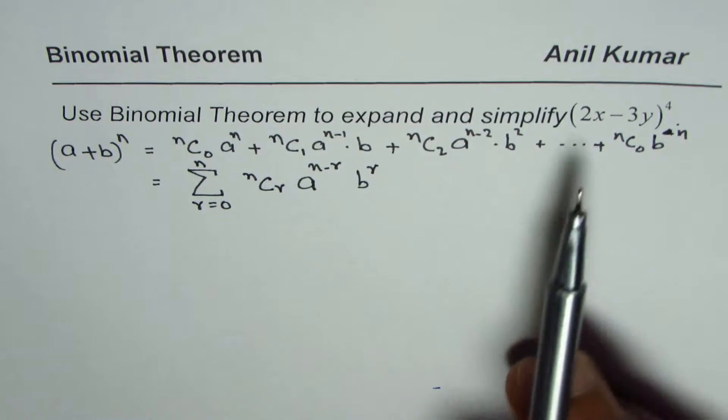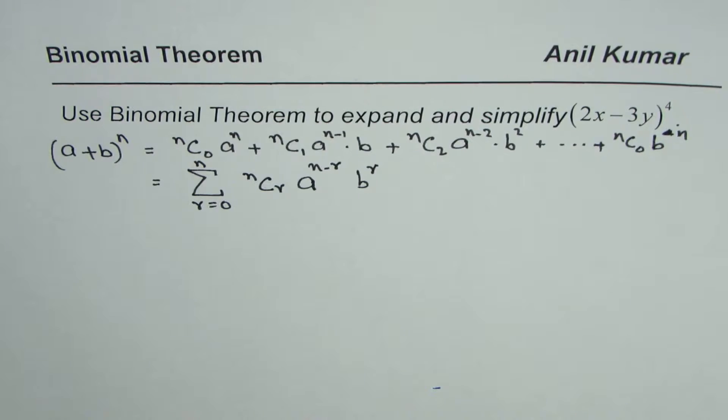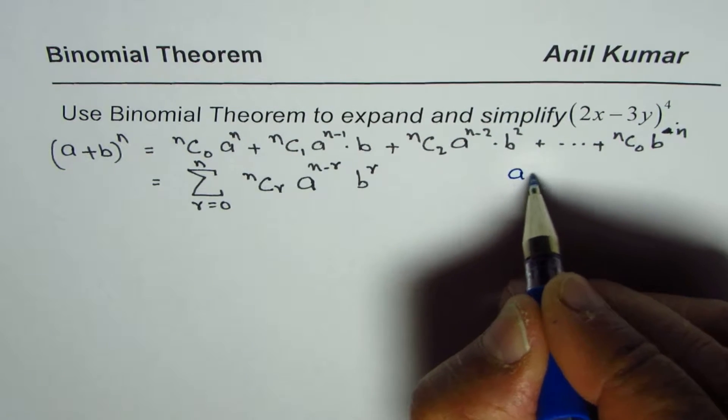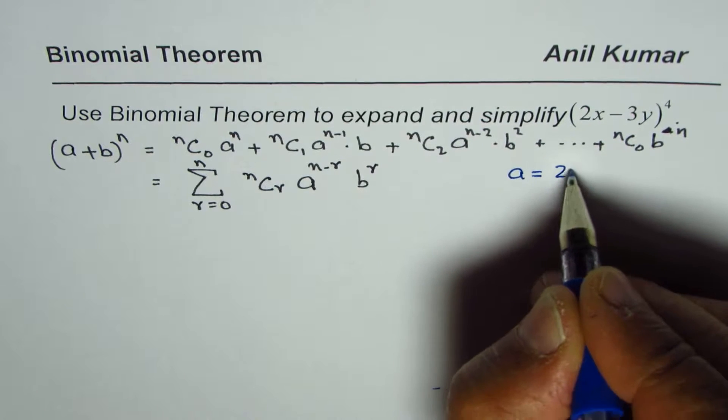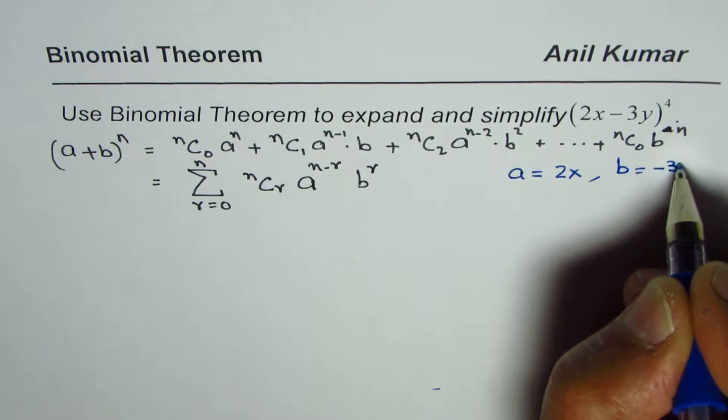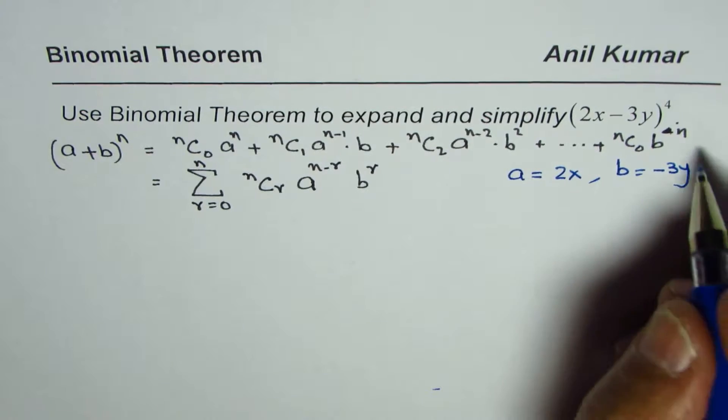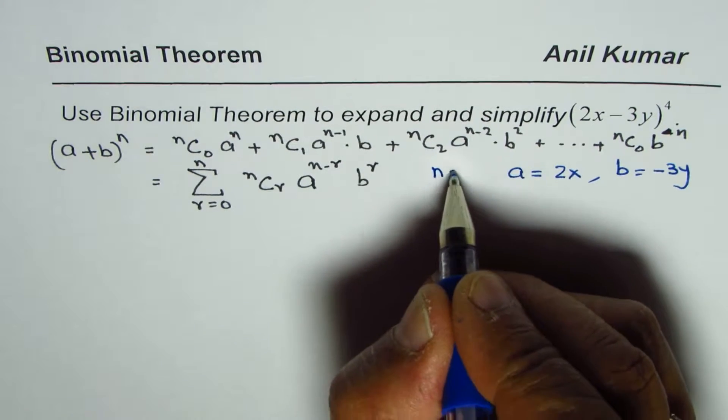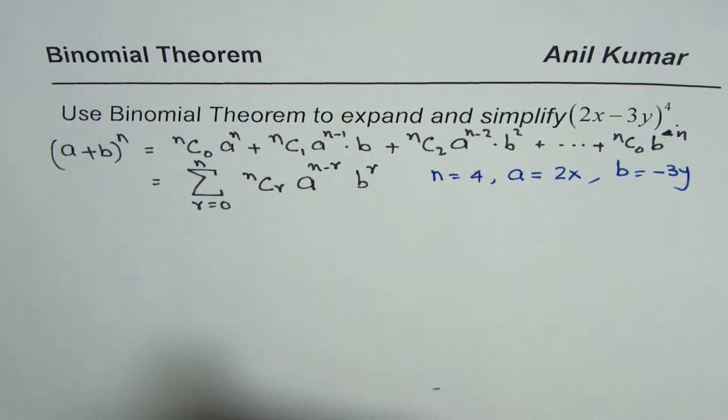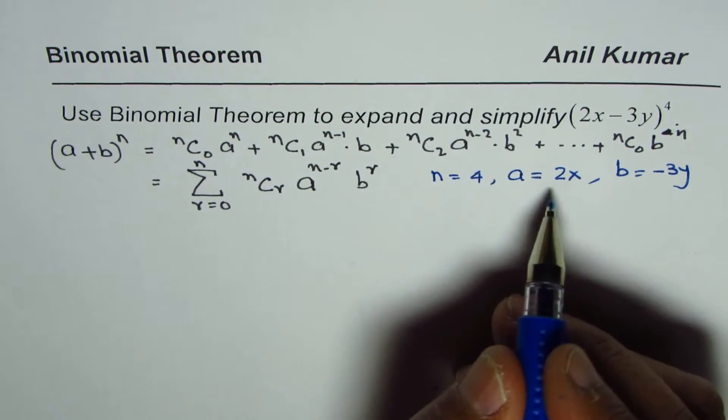We will apply this formula to expand 2x minus 3y. What we observe here is that for us a is equal to 2x and b is equal to minus 3y and we also have n as equal to 4. Let's expand it using this formula.